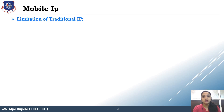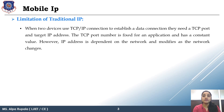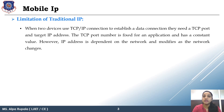We will understand the limitation of traditional IP. Whenever we talk about a TCP/IP connection, it basically works on two basic parameters: first is the TCP port number, and second is the IP address. The TCP port number depends on your application — what application data you want to transmit and receive. The TCP port number is fixed for a particular application and has a constant value. The IP address, however, depends on your network and can be modified according to network changes.